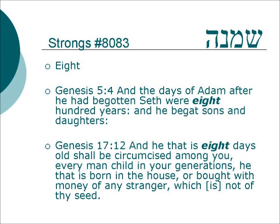Genesis 17.12: And he that is eight days old shall be circumcised among you, every man-child in your generation, he that is born in the house or bought with money of a stranger, which is not of thy seed.